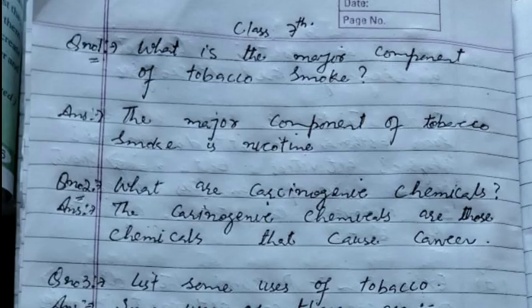Now we are going to discuss a few questions of the current lesson. Question number one: What is the major component of tobacco smoke? Answer: The major component of tobacco smoke is nicotine. Question number two: What are carcinogenic chemicals? Answer: Carcinogenic chemicals are those chemicals that cause cancer.